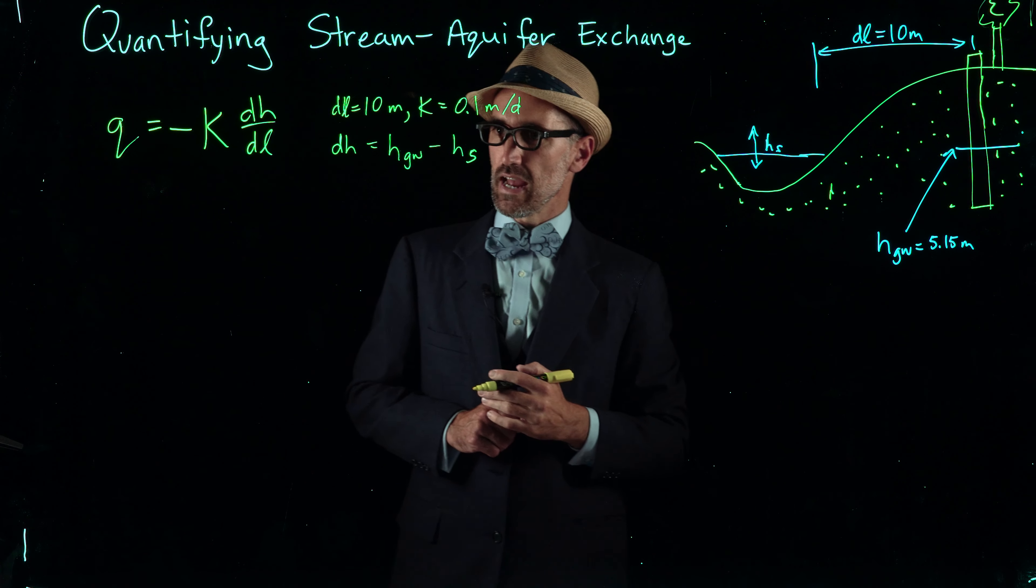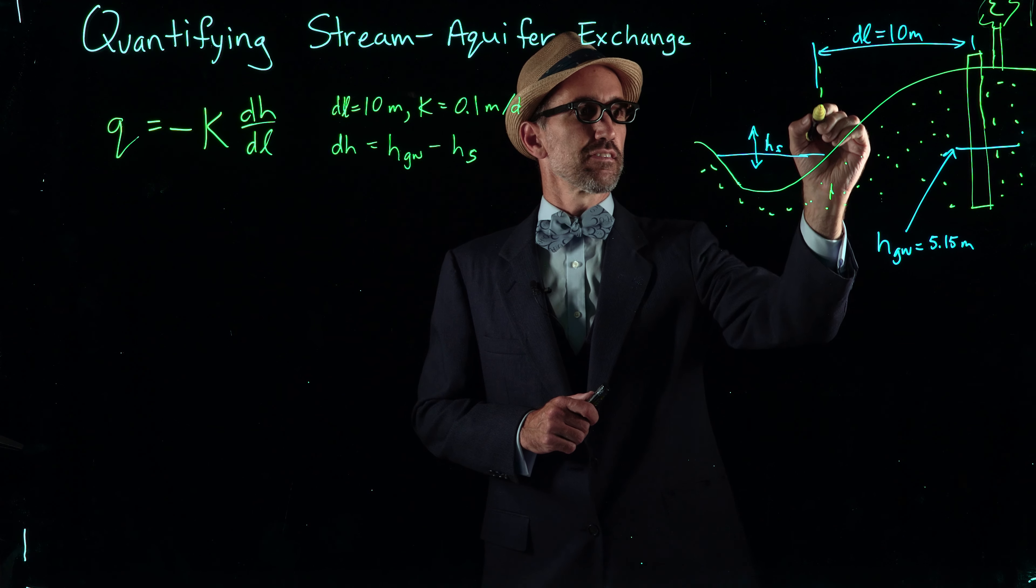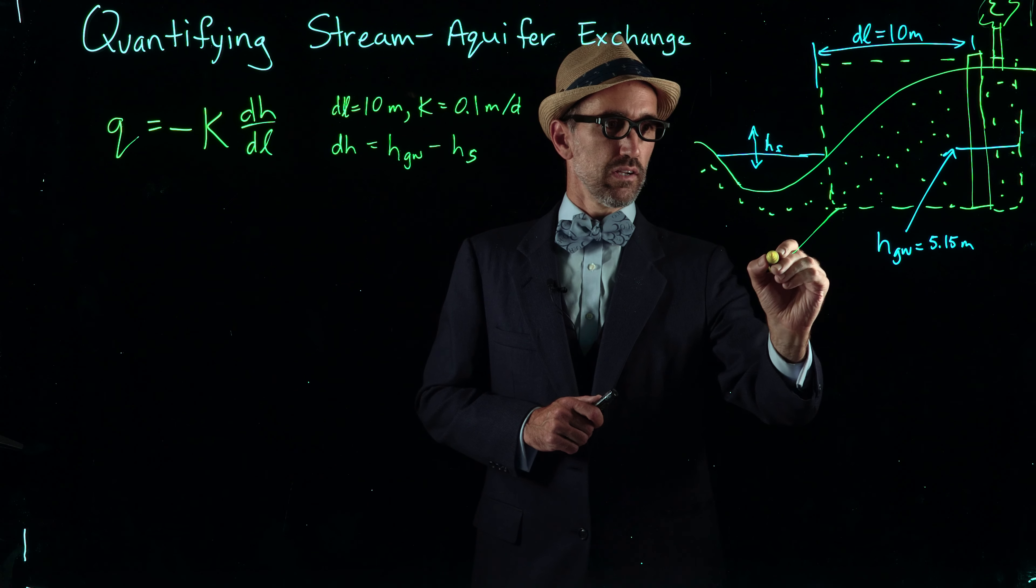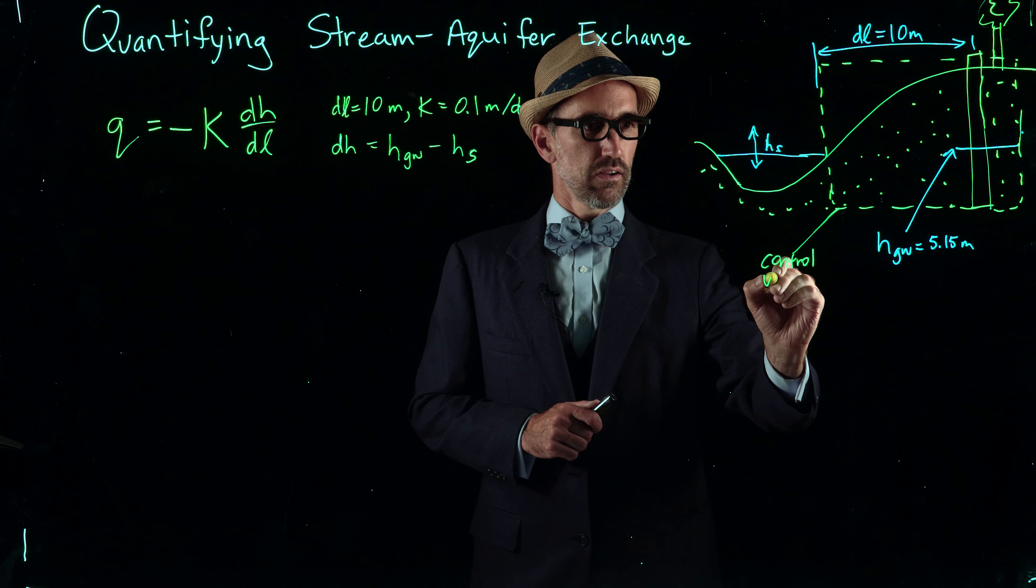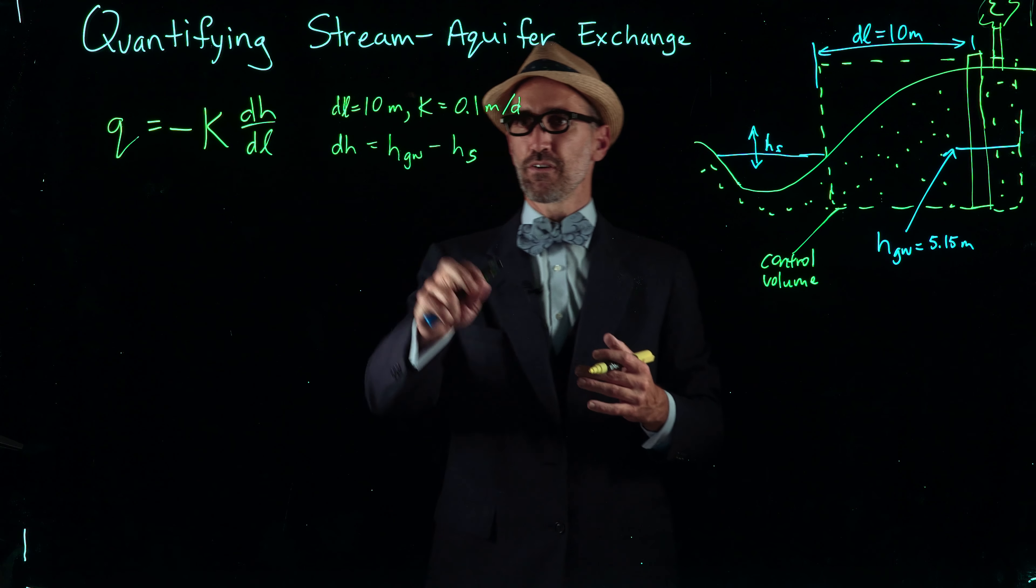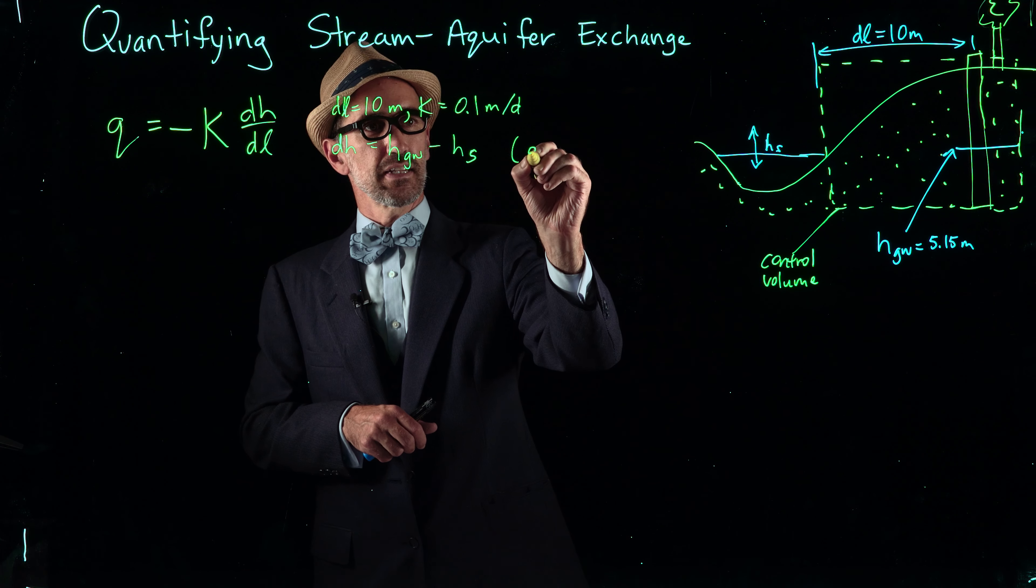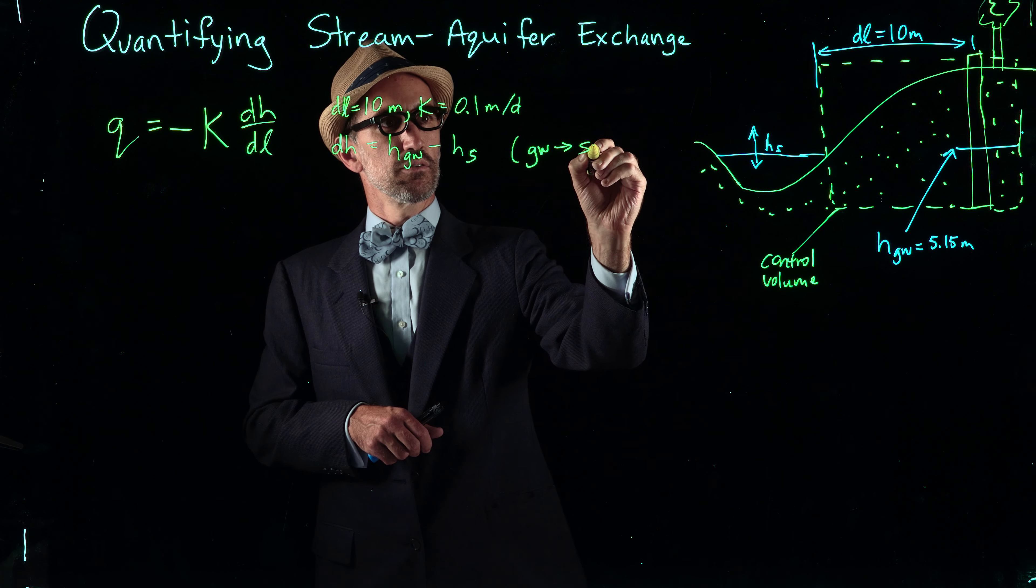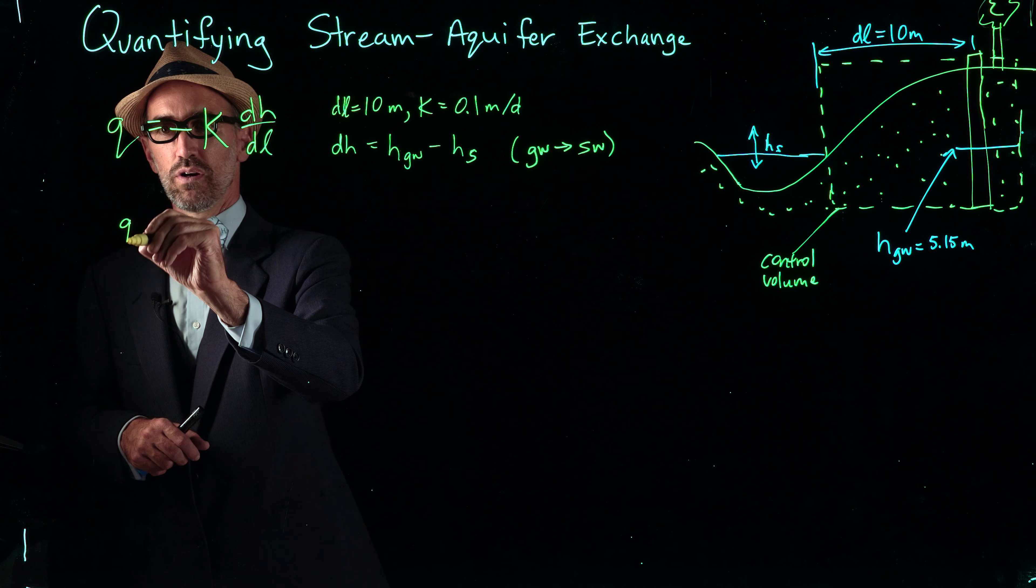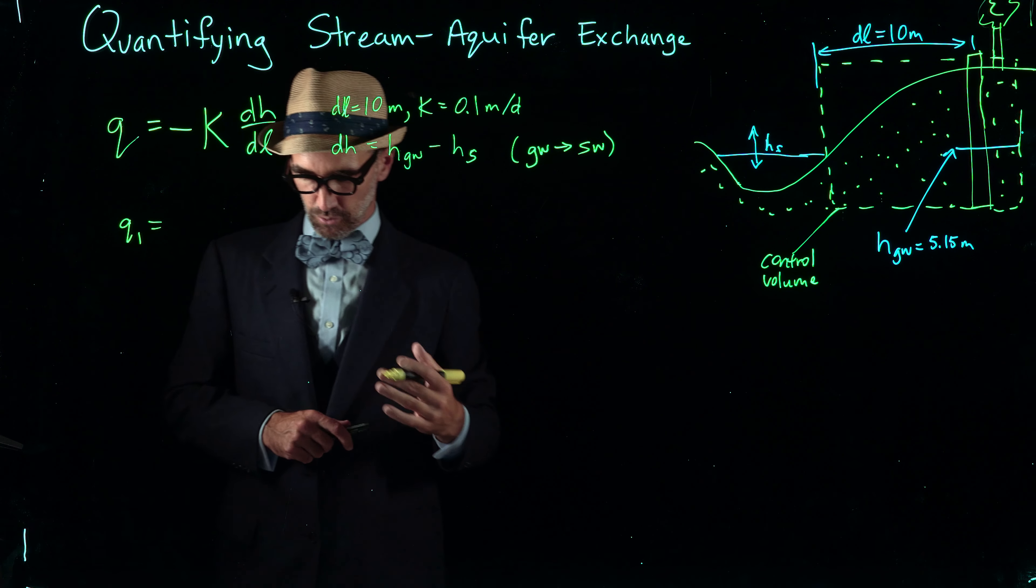What we can assume for this calculation is that groundwater is the control volume, so I'm drawing a little control volume around here. We're considering groundwater in the aquifer as our control volume. That's why I put the head of groundwater first. We're exploring the flux of groundwater to surface water, to the stream.